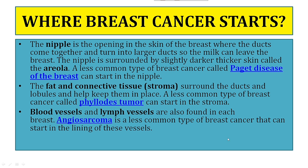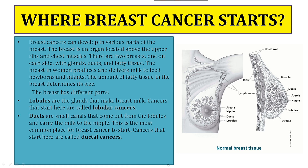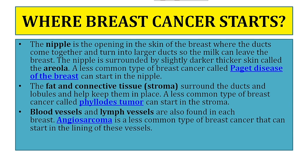The less common type of breast cancer called Paget's disease of the breast can start in the nipple. The two most common types of breast cancer are lobular cancer and ductal cancer. The less common types include: first, Paget's disease of the breast; second, phyllodes tumors; and third, angiosarcoma.